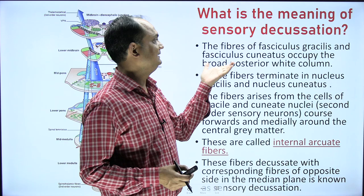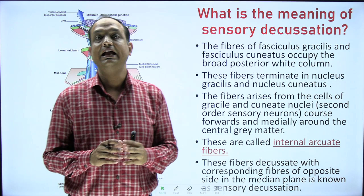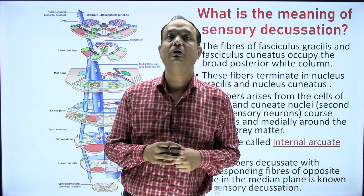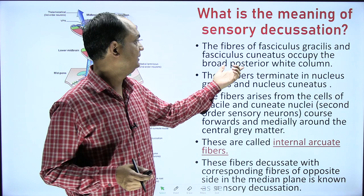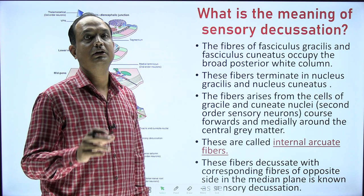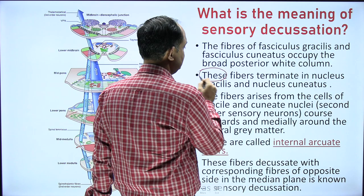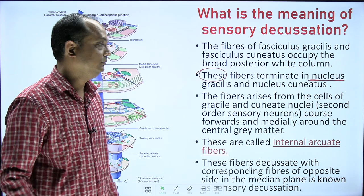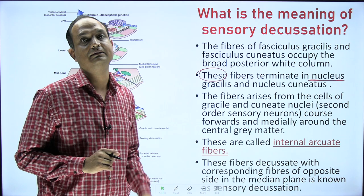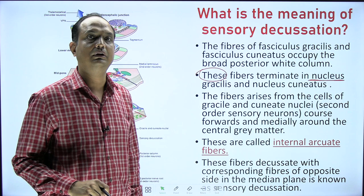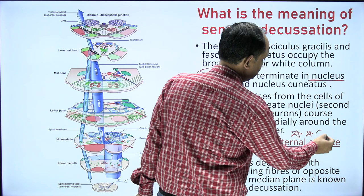Whenever you have fasciculus gracilis and fasciculus cuneatus — as I explained in my video on these tracts — these are the first order neurons present in the dorsal column of the spinal cord. These first order neurons, present in the posterior white column, terminate into the nucleus gracilis and nucleus cuneatus. The second order neurons arise from these two nuclei and are known as internal arcuate fibers.